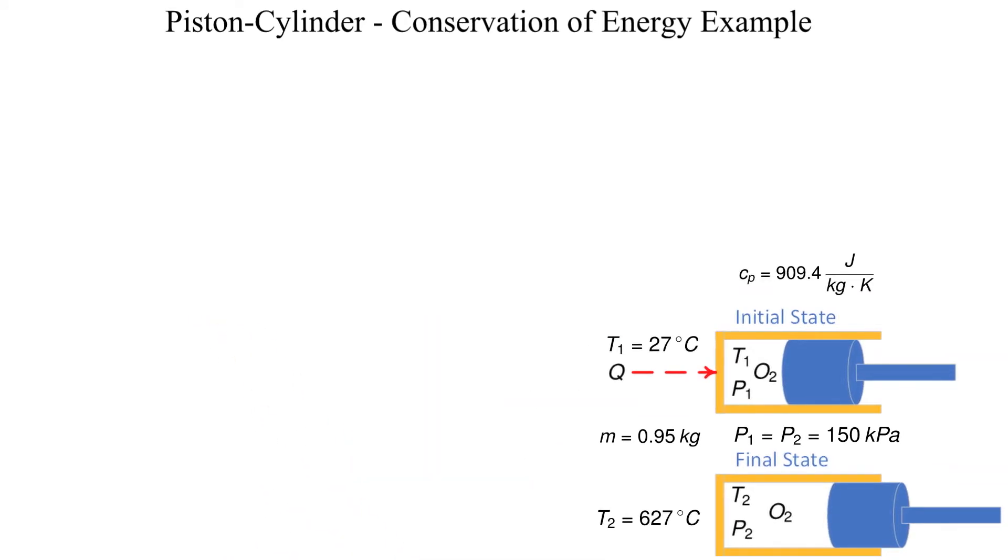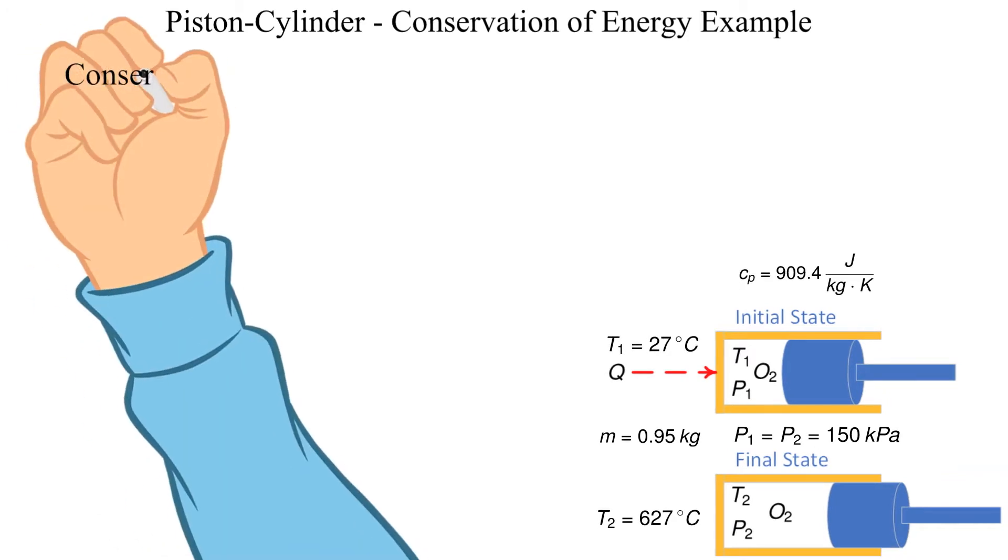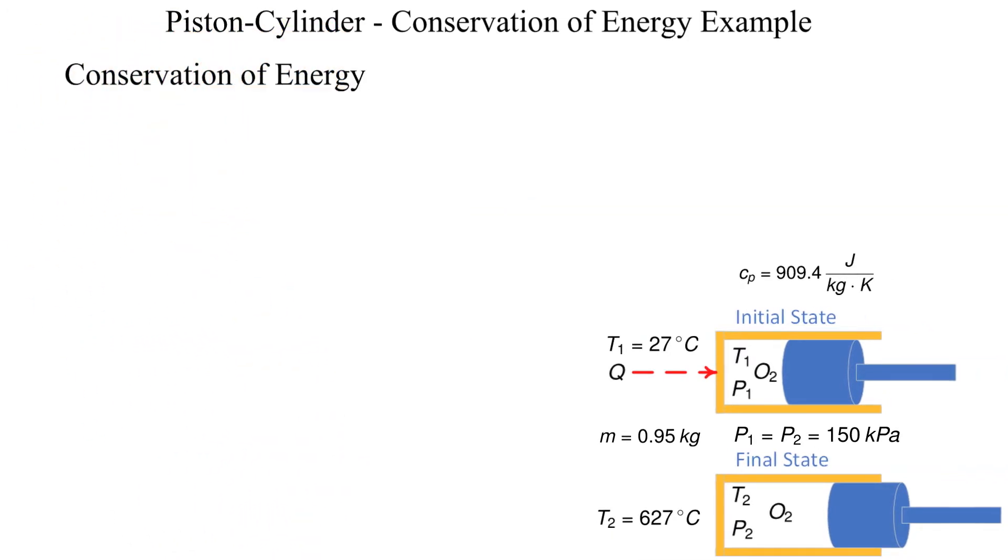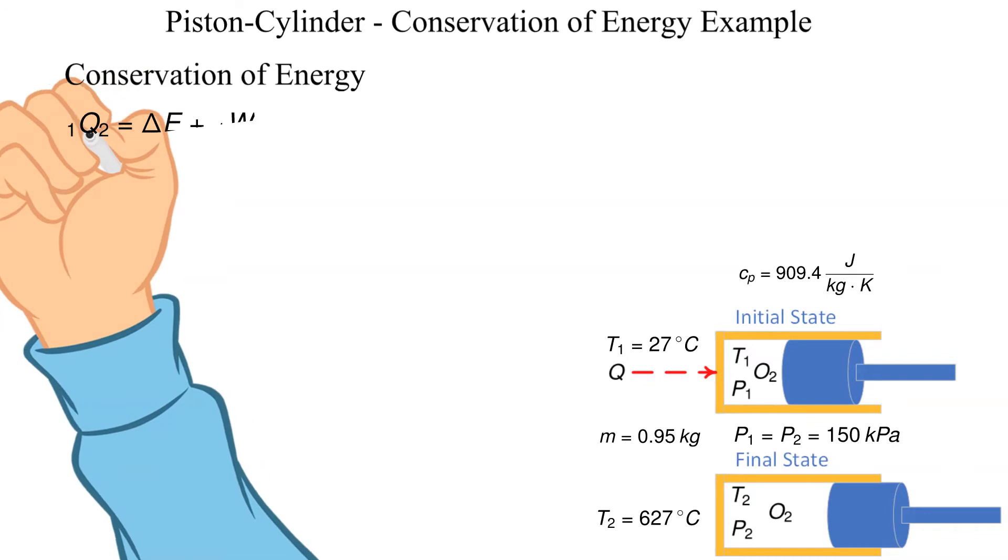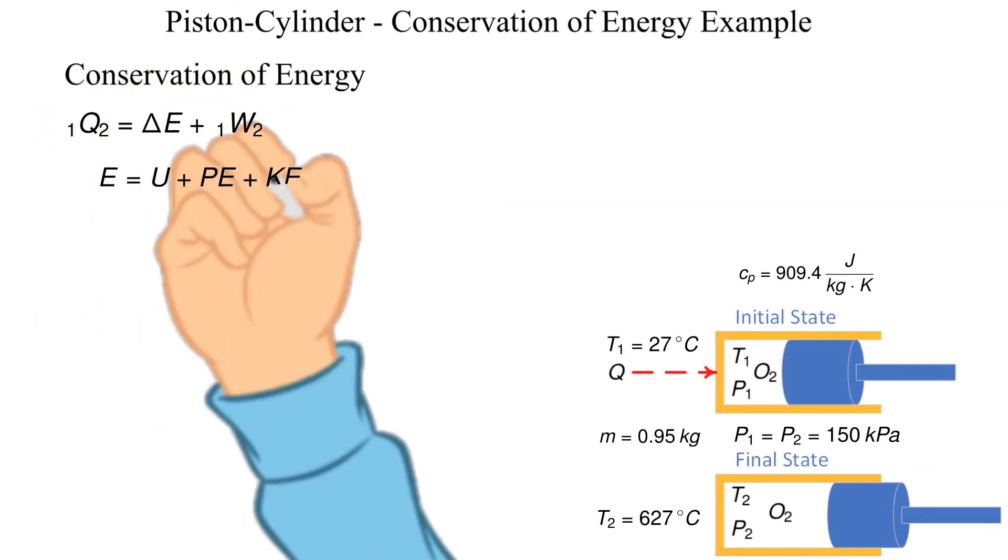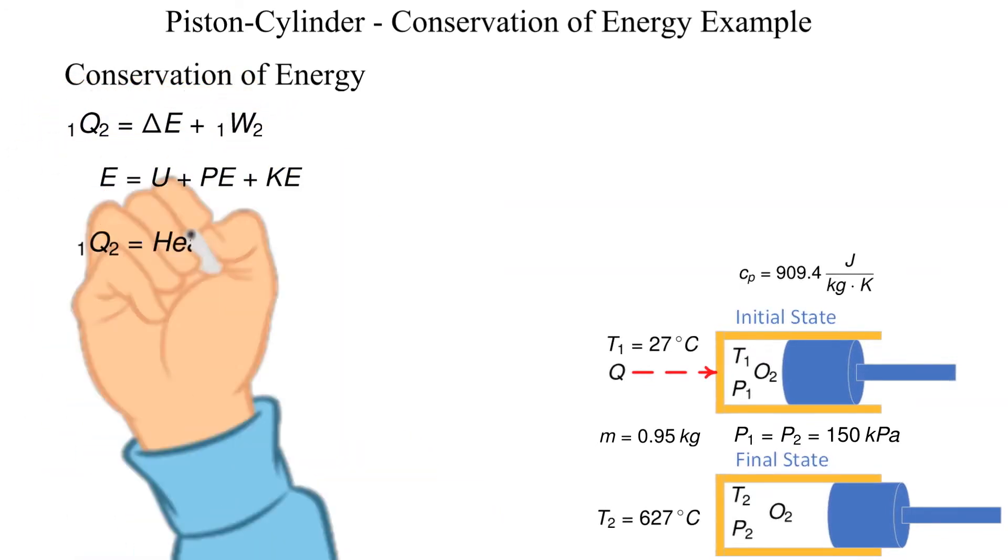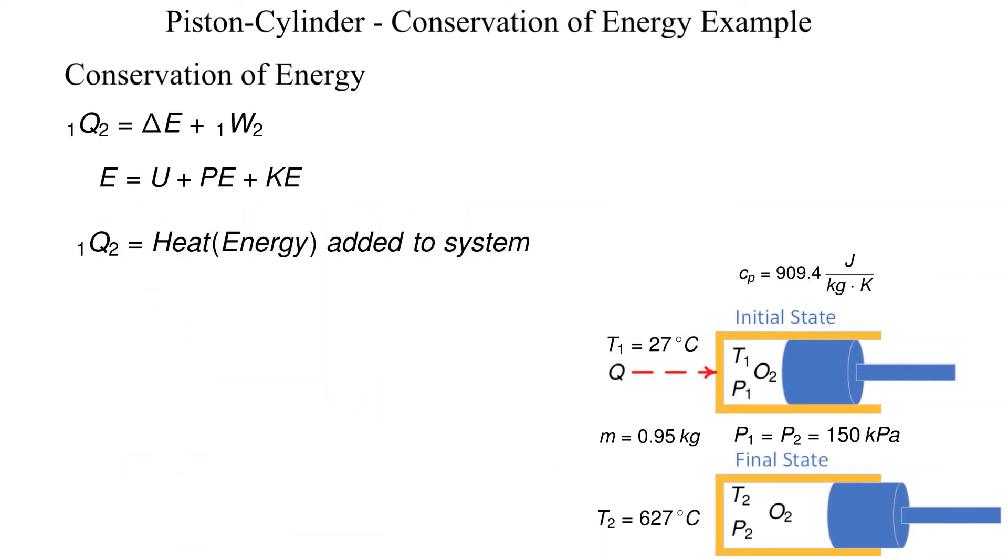Now we're ready to solve the problem. Let's start with conservation of energy for a fixed mass system. It is shown solved for the unknown with heat transfer from states 1 to 2. Recall that a positive heat transfer is energy added to the system while positive work indicates work by the system.